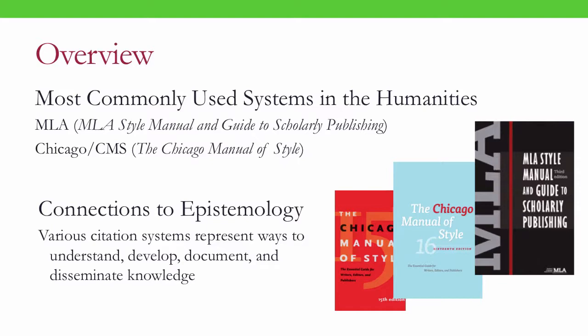I also offer some useful internet resources at the end of the video. One way to understand citation systems in general is as vehicles for types of epistemologies — that is, understandings of the nature of knowledge. The various citation systems represent different ways to understand, develop, document, and disseminate knowledge in particular ways.